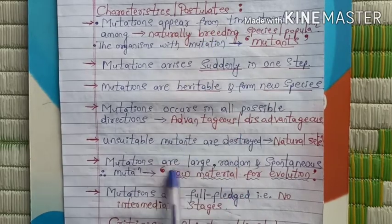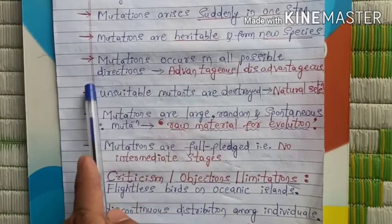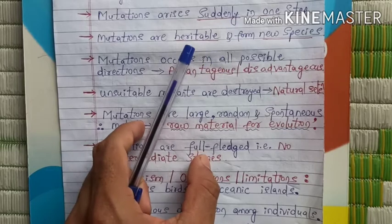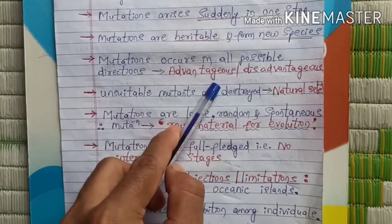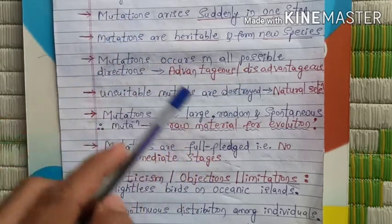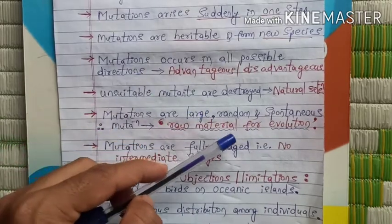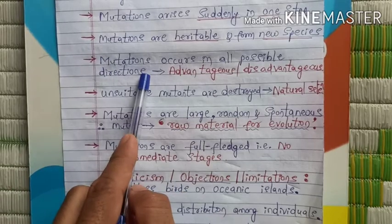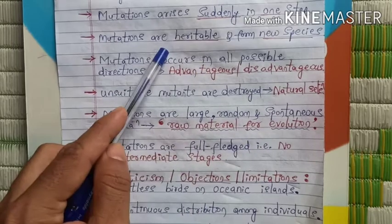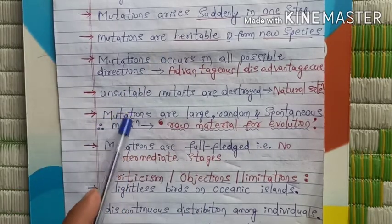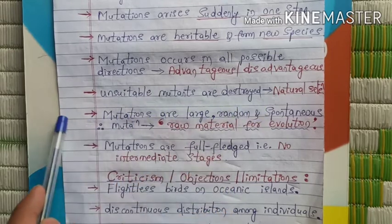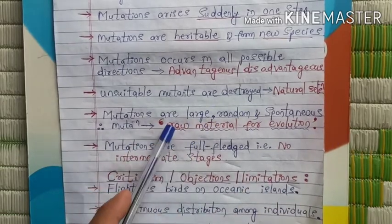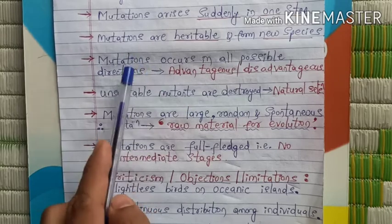The next postulate is that mutations occur in all possible directions — they can occur in any direction. For example, take the neck of a giraffe: in ancient times it was shorter, and modern giraffes have long necks — that is a gradual, directional change. But mutations are directionless. For example, like the sequence 2, 4, 6, 8 is a gradual increase, mutations are not like that — they can jump from 2 to 8, go back to 4, then 6, then 10. There is no fixed direction.